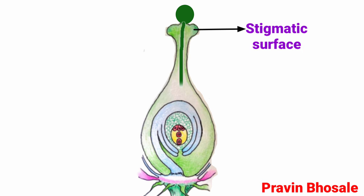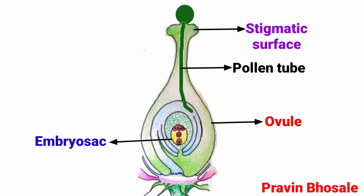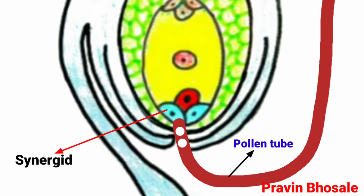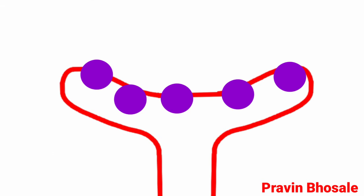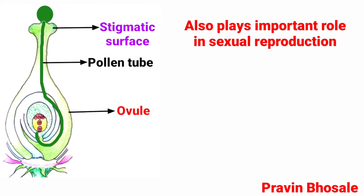The stigmatic surface provides the essential prerequisites for successful germination which are absent in the pollen. The pollen tube is finally pushed through the ovule and reaches the embryo sac. The tip of the pollen tube enters one of the synergids and then ruptures to release its content. Due to pollen-pistil interaction, intense competition develops even among the compatible pollen grains. It also plays an important role in sexual reproduction and seed formation.